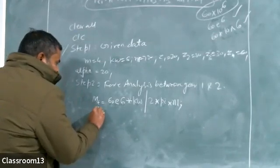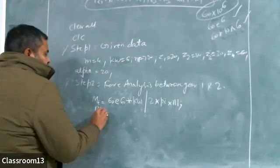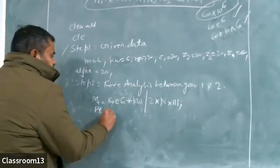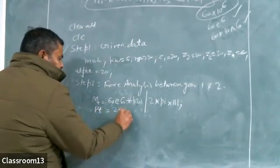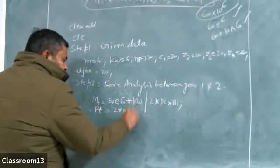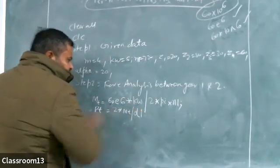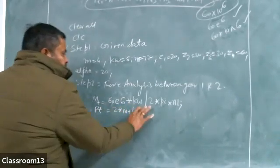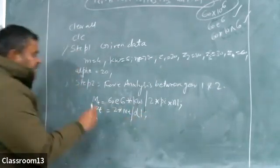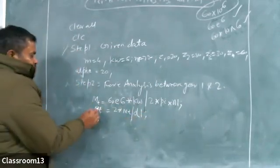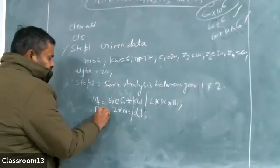Tangential force is given by 2 times Mt1 divided by D1. This is the tangential force on gear 1, so I am writing Pt1. This is the torque on gear 1, so I am writing Mt1.